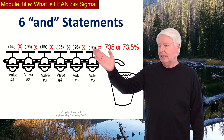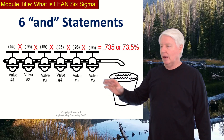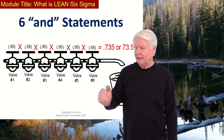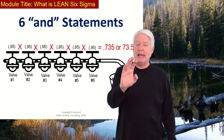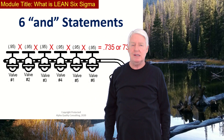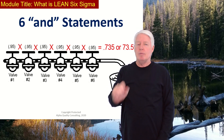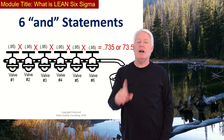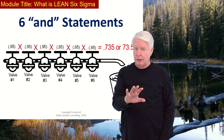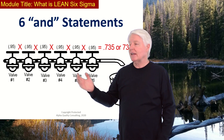Six Sigma is about improving the probability of individual AND statements. Lean is about reducing unnecessary complexity — getting rid of the AND statements you don't need. As AND statements increase, that's called complexity. In our society, AND statements are going up exponentially. This symbol represents 10,000 AND statements — think of the specification limits in an automobile, for example.